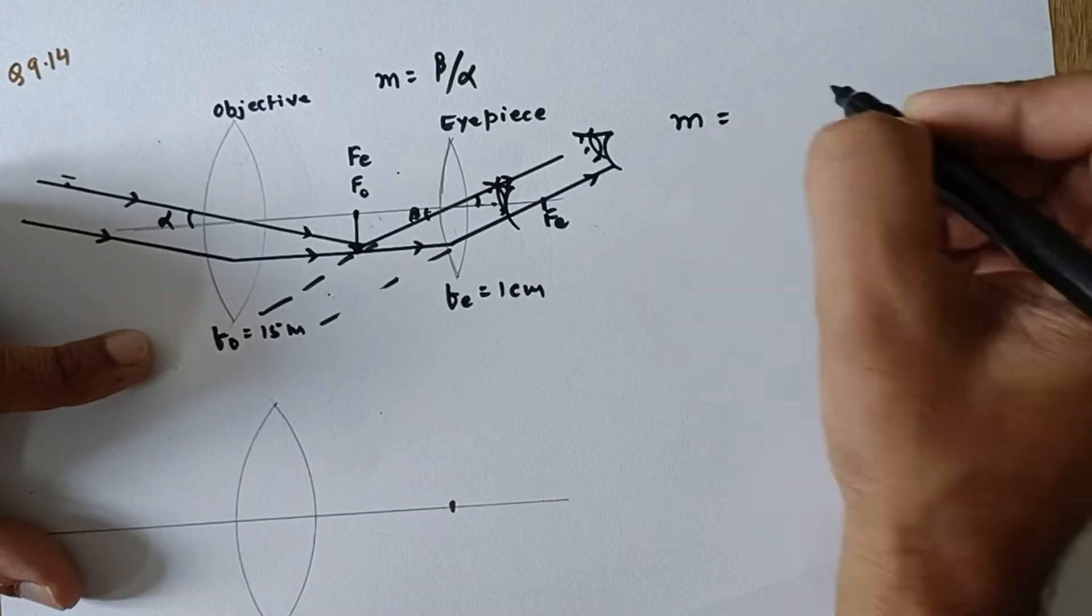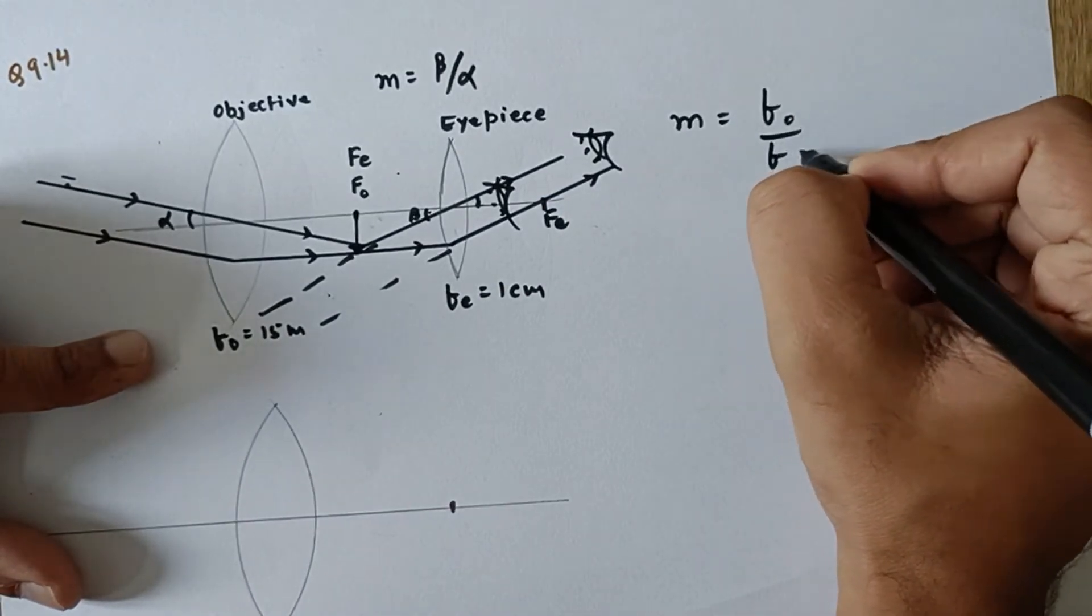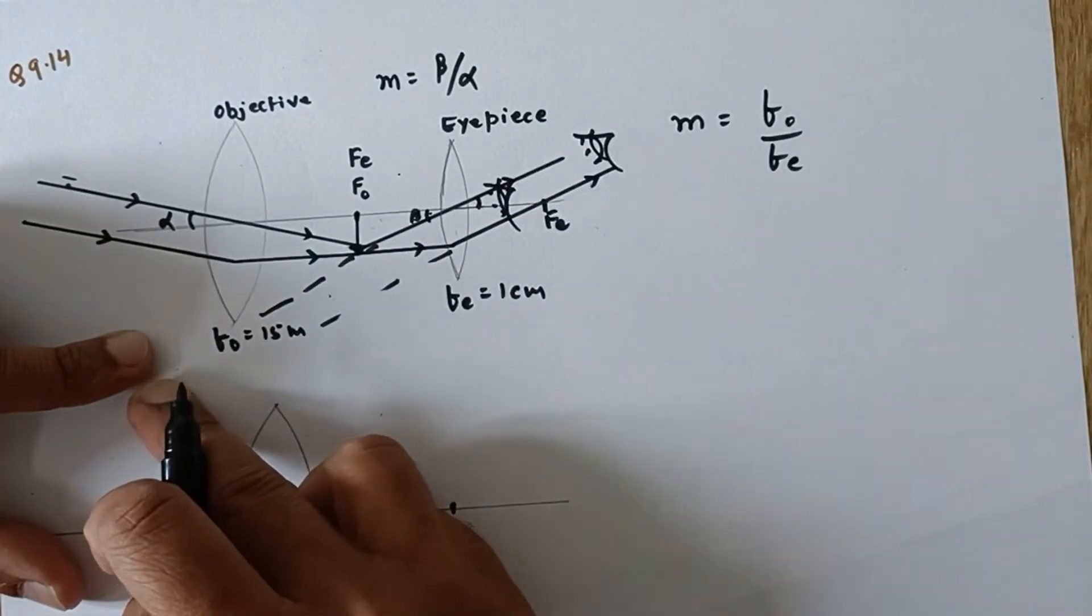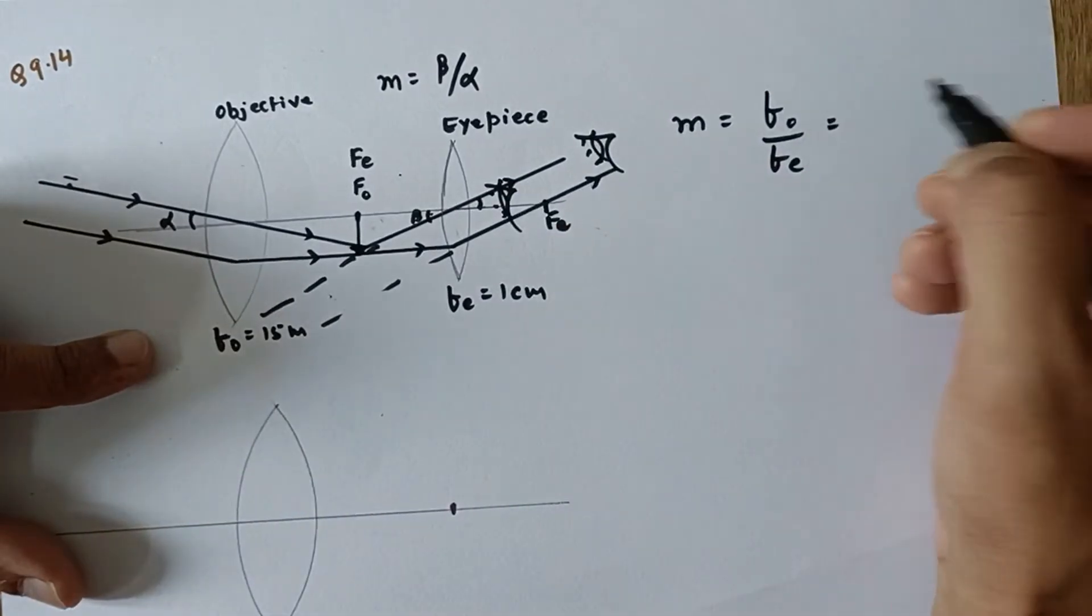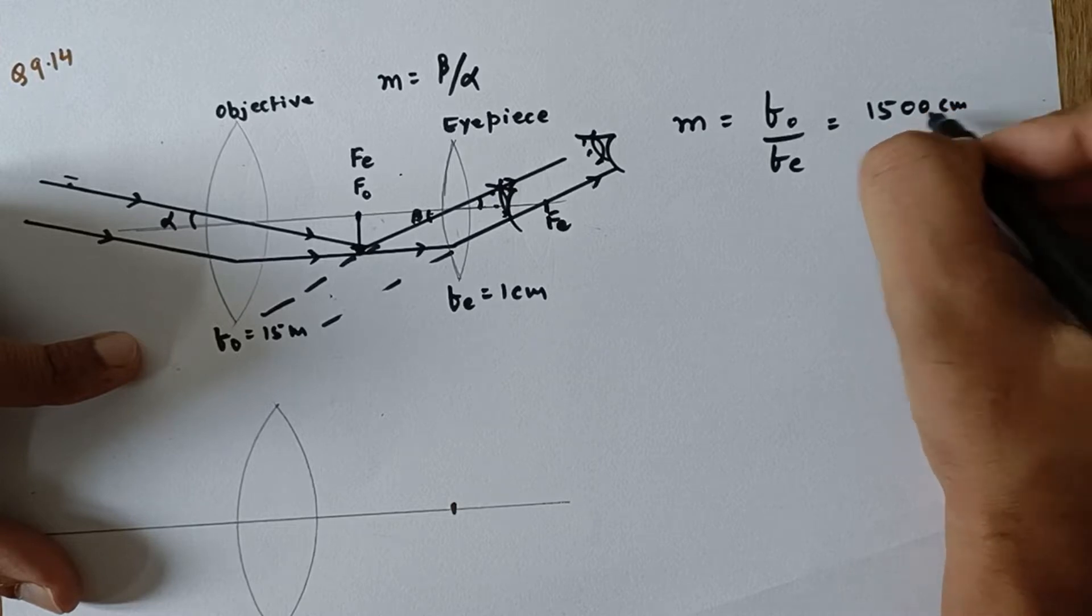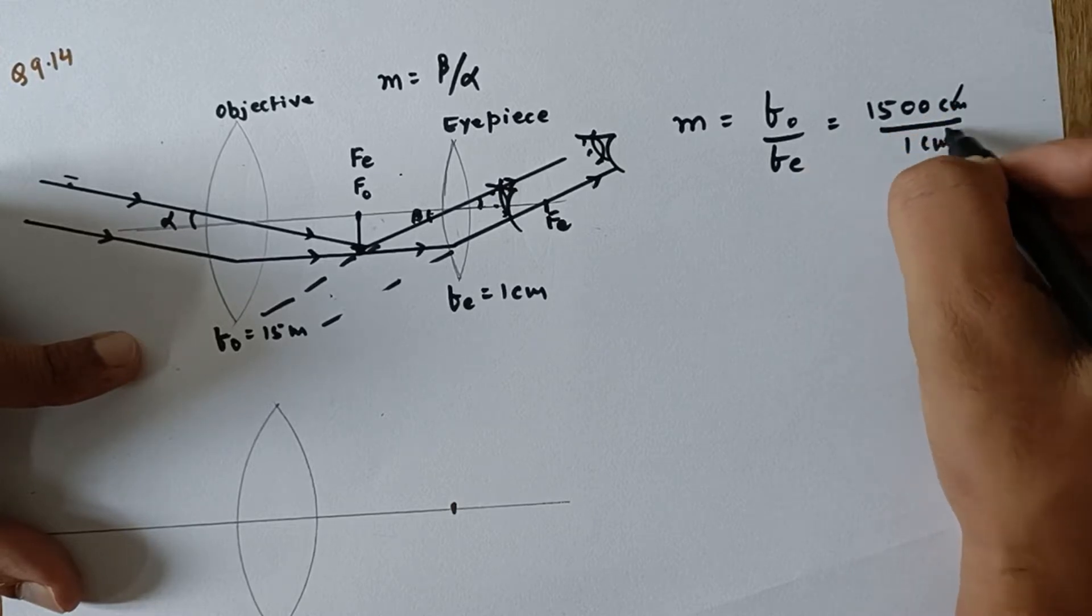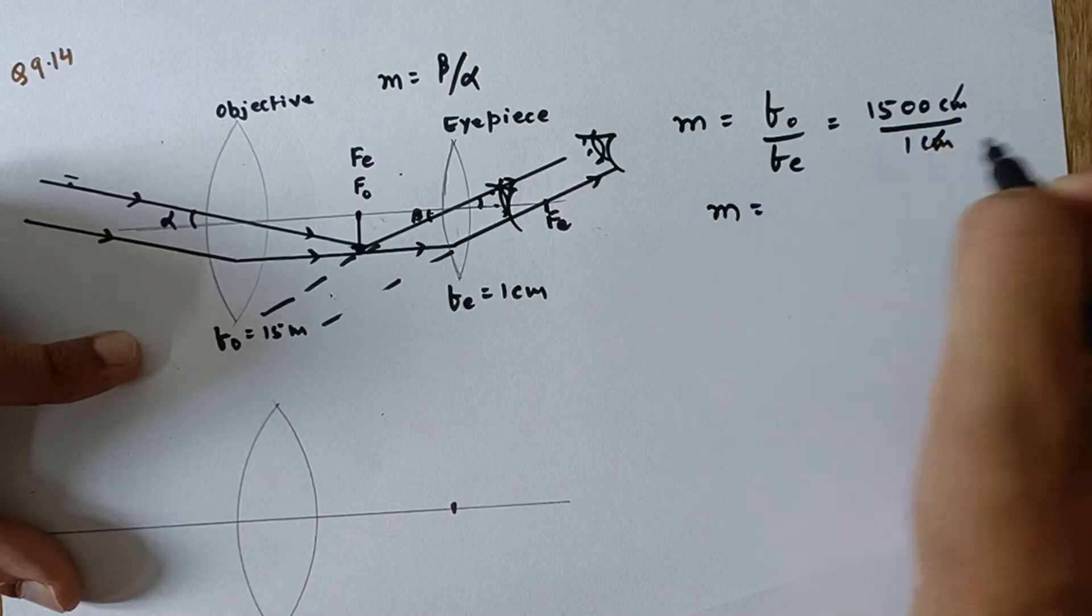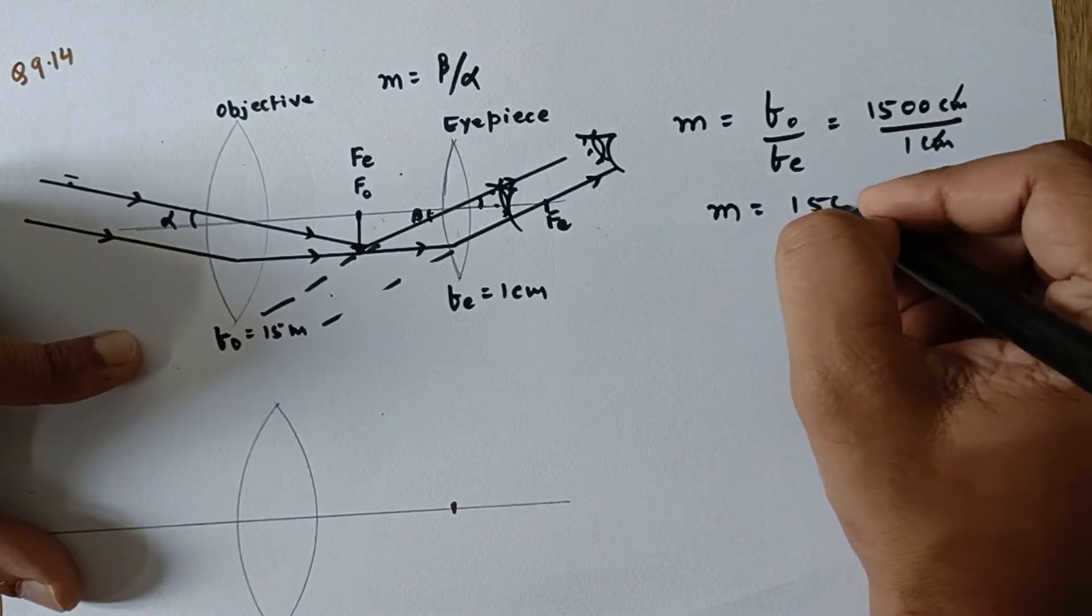So this angular magnification is equal to Fo upon Fe for this particular case when final image is at infinity. So we will substitute all the values. So 1500 centimeter divided by one centimeter, centimeter gets canceled. So the final answer is 1500.